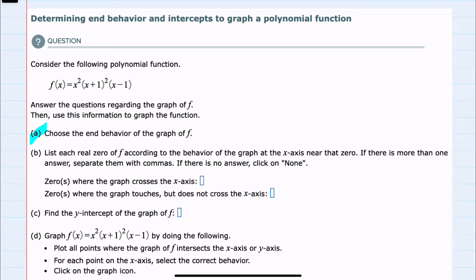First, to choose the end behavior for the graph of f of x, I can look at the leading coefficient and the degree of this polynomial. However, since it's factored, I can look at each one of these variables that are ultimately being multiplied and see that we have an x squared. From the next term we have another x, but since the x plus 1 is being squared, the leading coefficient, once we square that, will again be an x squared. And then from the last term we have just an x. So if we were to multiply all of these out, our leading term would be x squared times x squared times x, or x to the fifth.